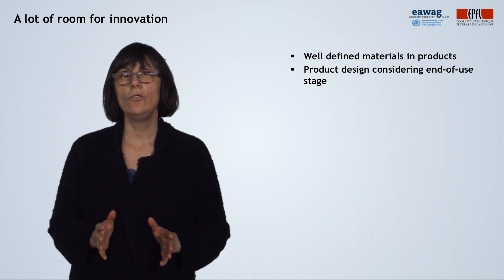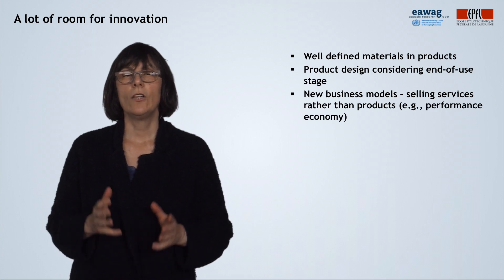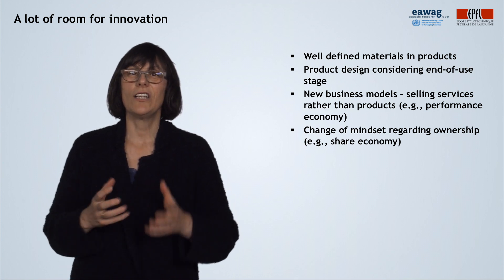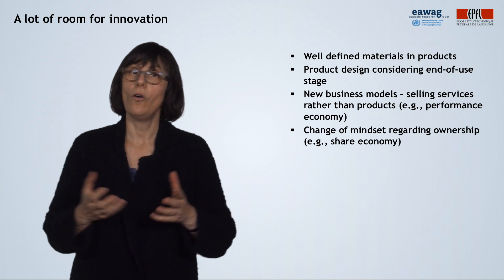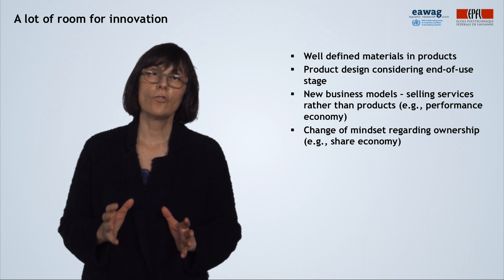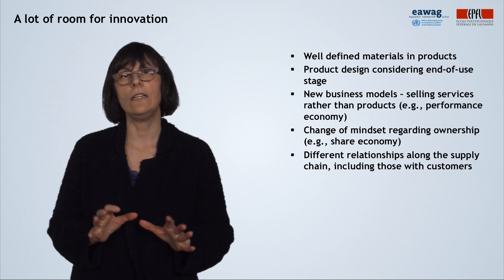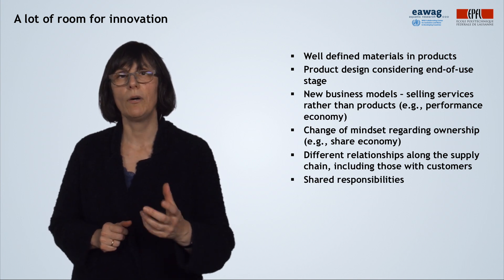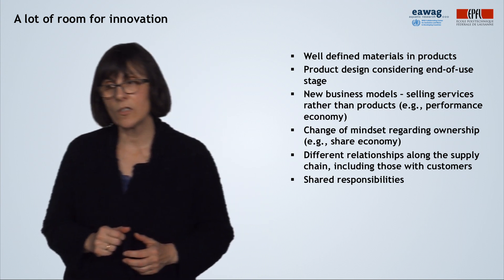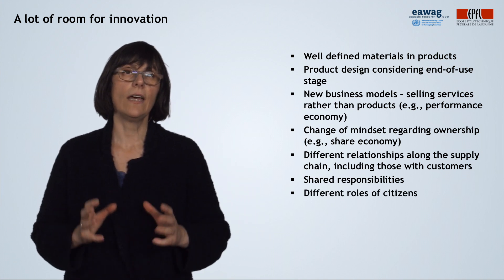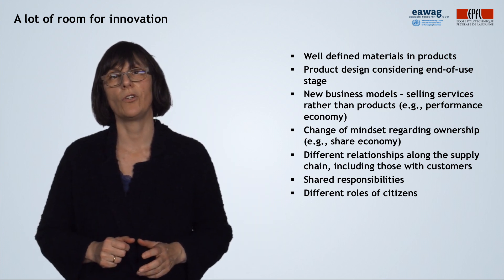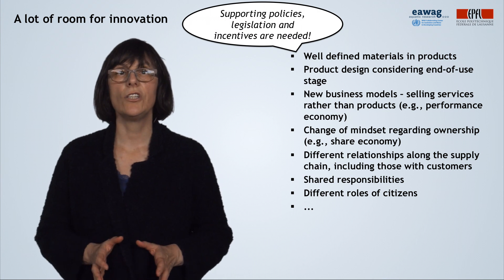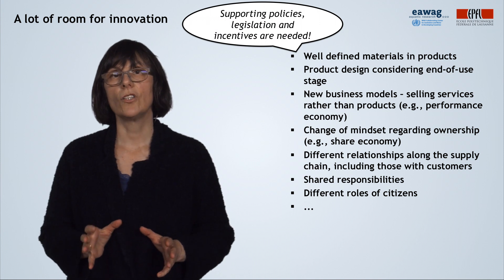Also, of particular importance are new business models, where a lot of innovation is needed, so that services are sold and not necessarily the products. This also includes our relationship to ownership — do we actually need to possess and own a product, or are we perfectly happy with the service it provides us? This also means that new types of relationships are needed along the supply chain, where trust among partners has a prominent role, because it is about sharing proprietary information about materials and parts. Citizens have a new role too, making sure that materials indeed return into the next production cycle, and government can provide supportive policies, legislation, and incentives.